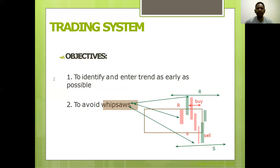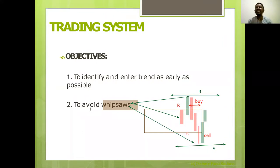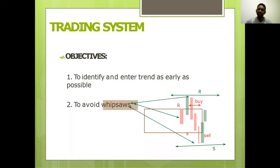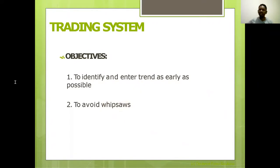If this happens most of the time, the trading system you have is not helping you with objective number two — identifying trends. It is failing that test. That system must be thrown out; it's not working. It does not know how to identify trends, so it makes you get caught in false moves. You need a new system.